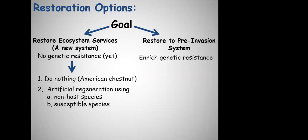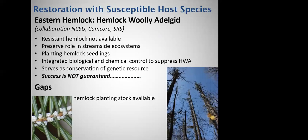Another option when genetic resistance is not available is to plant susceptible species. This is what's happening with the restoration project going on with eastern hemlock. Although resistant hemlock is not currently available for widespread planting, there is still a desire to preserve those important stream-side ecosystems. There's an effort to plant hemlock seedlings, integrating this with biological and chemical control to suppress hemlock woolly adelgid. This will hopefully serve as a method of gene conservation, preserving some of the genetics of hemlock and helping preserve stream-side ecosystems. The problem is we don't know how effective it's going to be in the long term.